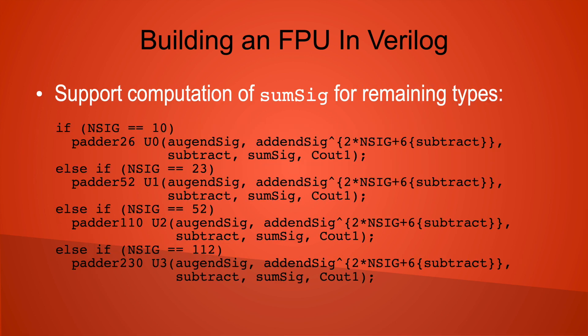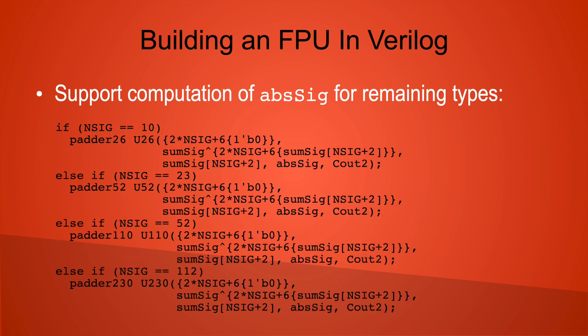As of the last video, the significand registers no longer grow exponentially for the 32, 64, and 128-bit floating-point formats. So this version of the code can compute some_sig for these additional data types. We also have to support computing ABSIG for the other binary data types as well.